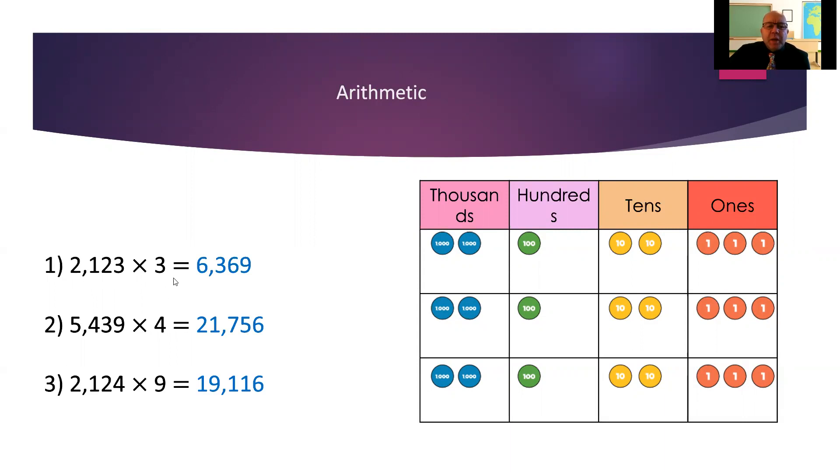2,123 multiplied by three, we can see that here with our counters, we've got 2,123, three times, and altogether we've got 6,369. You might have used the counters again for 5,439 times four, with an answer of 21,756. Now, as our numbers get a little bit bigger, so this time we're multiplying by 9, it suddenly gets a little bit trickier to do the counter method because it means our picture, our illustration becomes very, very big. We would have nine rows of counters. So when we get to these bigger numbers, if you're confident with the column multiplication, then that's going to be a lot easier. There are your three answers.